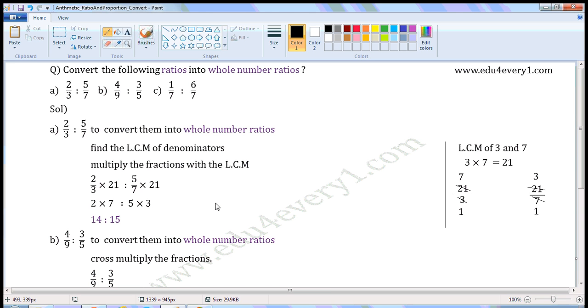Now, 2 × 7 is 14, and 5 × 3 is 15. So 14 is to 15. This is the whole number ratio of 2/3 is to 5/7.